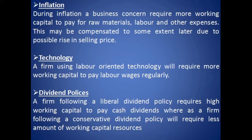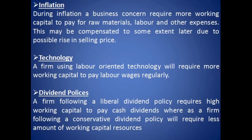Technology is another factor. A firm which uses labor-oriented or traditional technology will have high wages bills, so it must make provision for a high amount of working capital. If modern technology is used, the amount of labor involved is less, so less needs to be provided for wages. Next are dividend policies — dividend is the part of profit distributed among shareholders. When a company pays dividend, there is an outflow of cash, which can strain the amount of working capital.